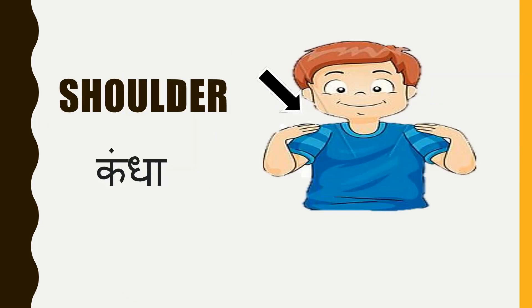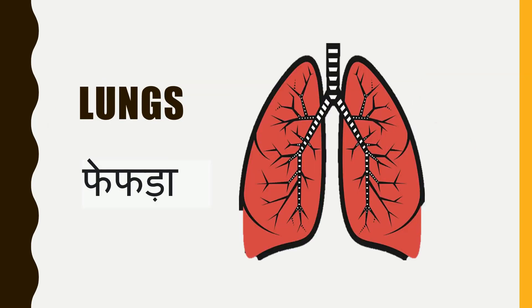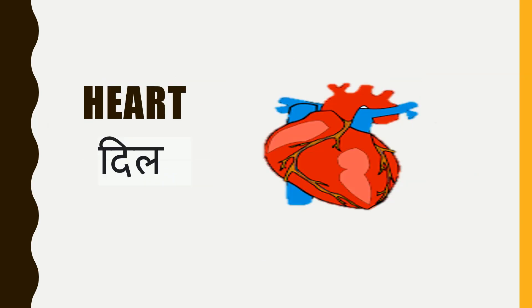Shoulder, or shoulders, and in Hindi, it is called kandha. Lungs, and in Hindi, they are called fefda — because we have two lungs, so these are called fefda. Heart, and it is called dil in Hindi.